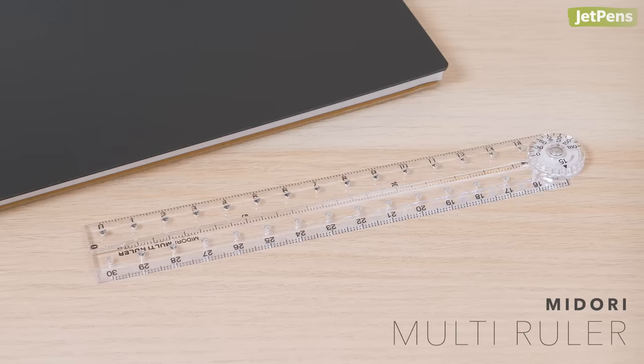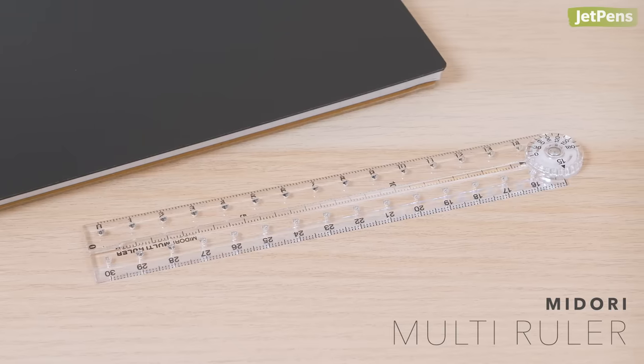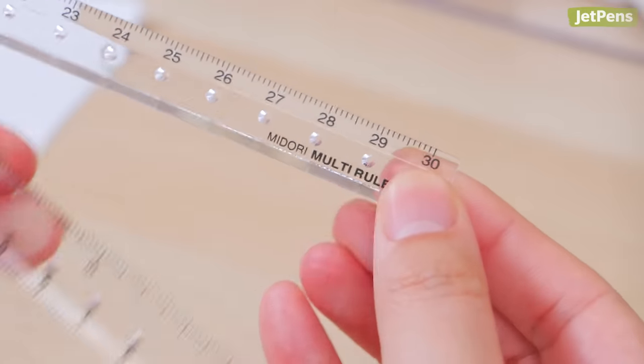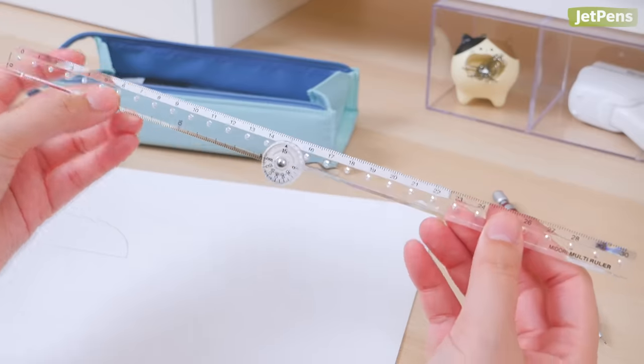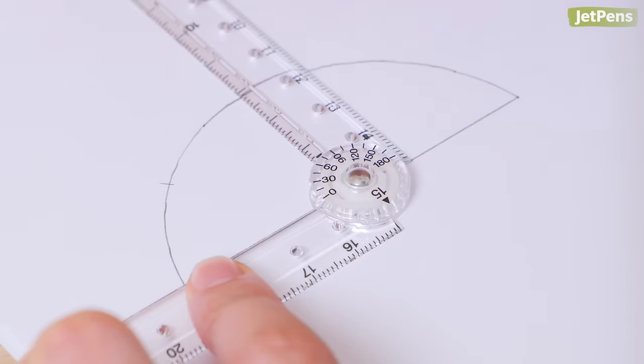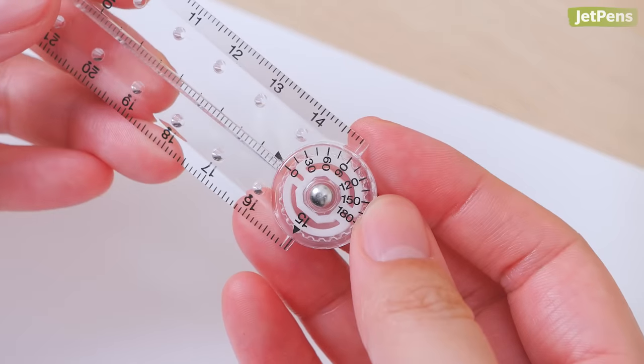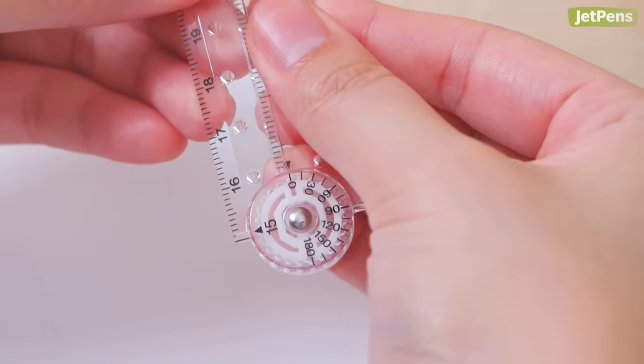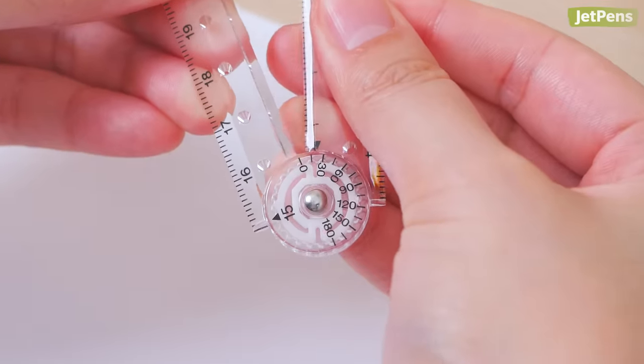Portable and convenient, the Midori Multi-Ruler is jam-packed with thoughtful features. It measures 30 centimeters when fully extended and can fold in half for compact storage. It also works as a protractor and a compass. The circular swivel joint in the center is marked from 0 degrees to 180 degrees, and the ruler snaps into place at each interval.